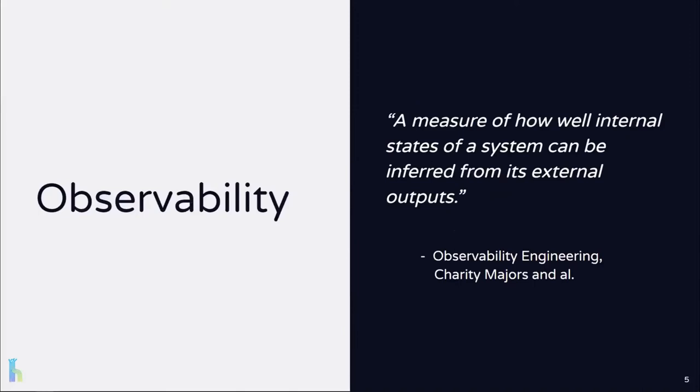In the software industry, there isn't a clear, agreed-upon definition of observability. Depending on where you look or who you ask, you might get a slightly different definition. We prefer this definition originating from control theory, which lays out the core principle: observability is a measure of how well internal states of a system can be inferred from its external outputs.